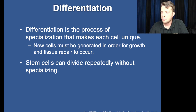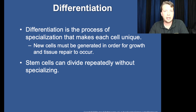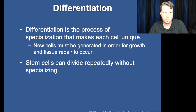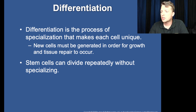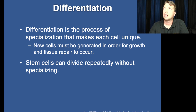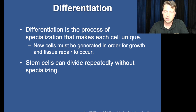Stem cells are base cells for our body. They have all the genetic code and could become any cell in our body — they just need to be differentiated based on the hormones or chemicals present into a brain cell, heart muscle cell, bone cell, or whatever. Stem cells are very prominent during fetal development and are extremely concentrated in fetal umbilical cord blood and the Wharton's jelly — the clear gel-like substance inside the umbilical cord.